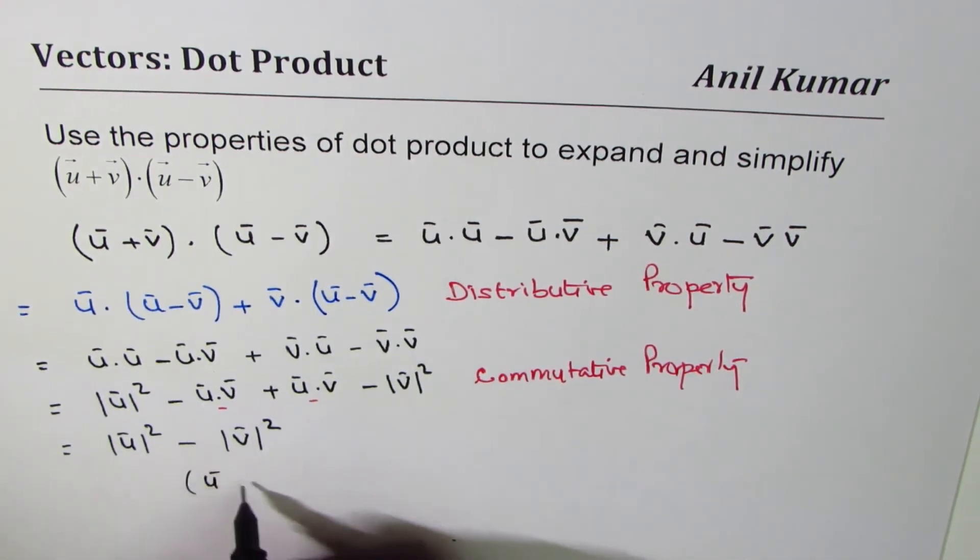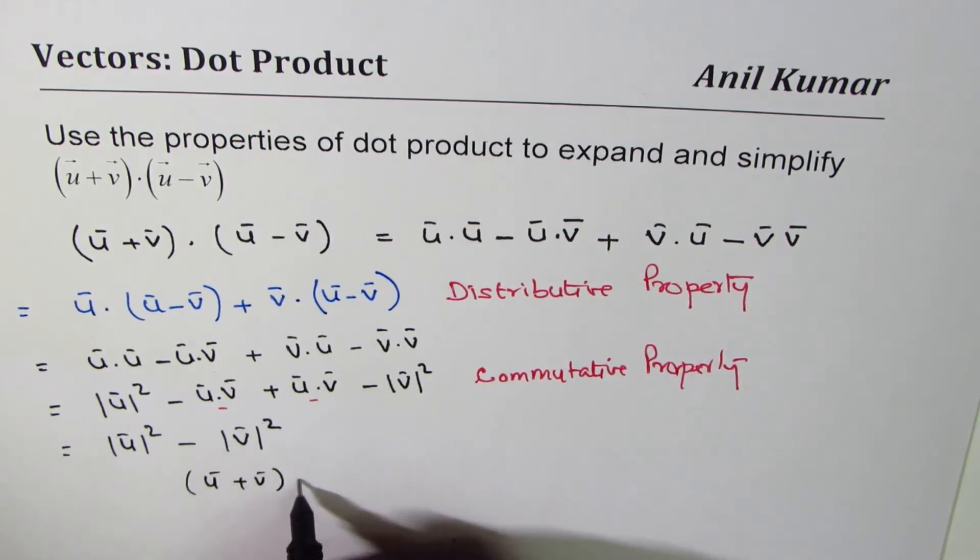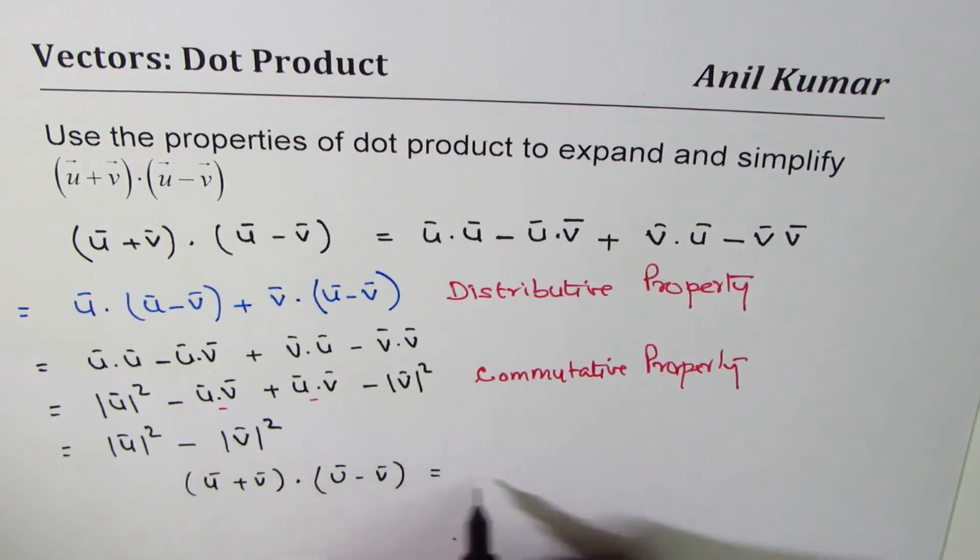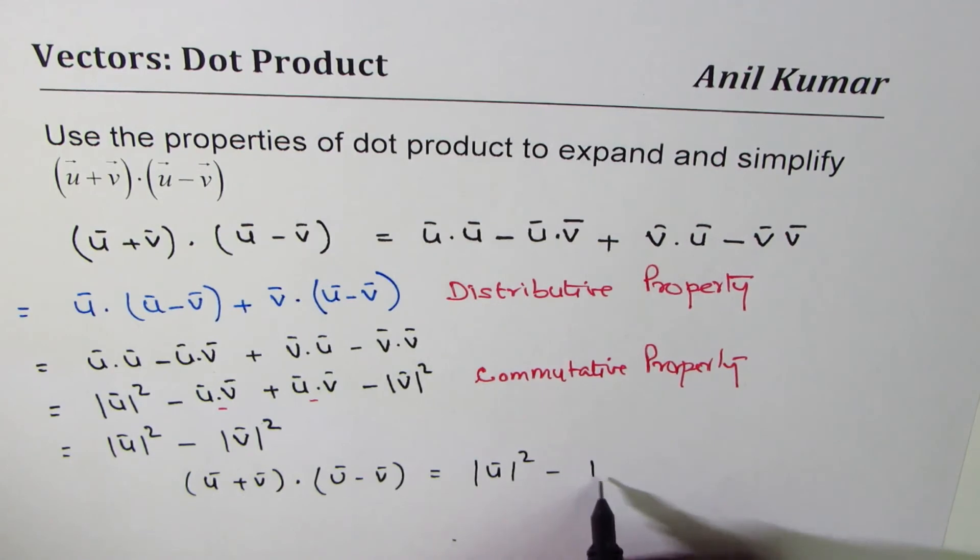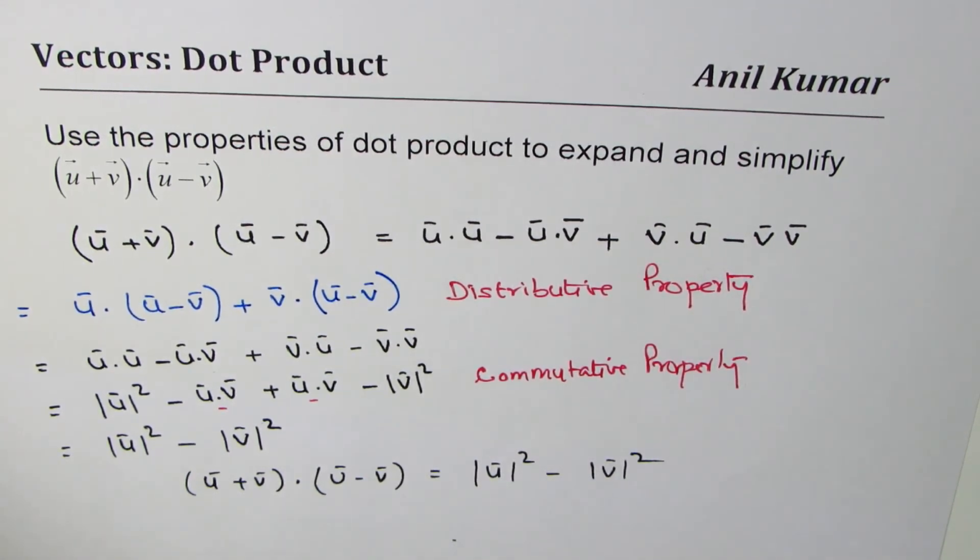Therefore, dot product of sum of two vectors and their difference is difference of the squares of their magnitudes. That is the result which you get. I'm Anil Kumar and I hope that helps. Thank you.